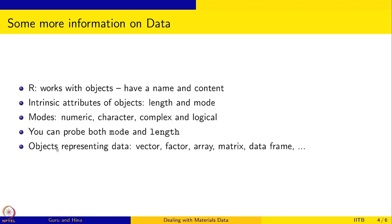Objects representing data can be of many different types: vector, factor, array, matrix, data frame, etc. We have seen tables, matrices, and data frames. There could be much more detailed information, and this might become very important if you get into R programming.